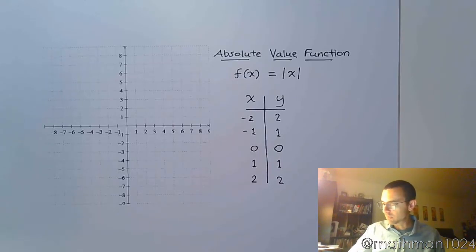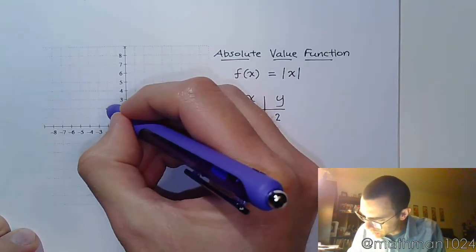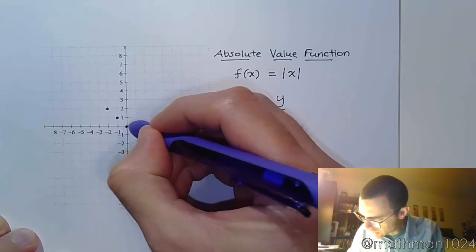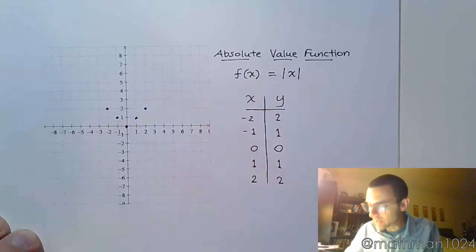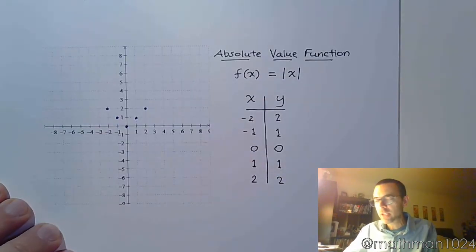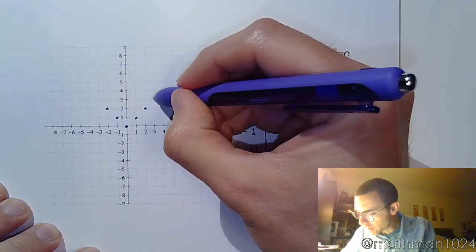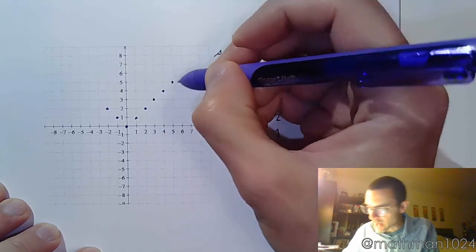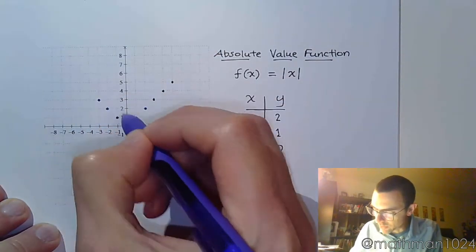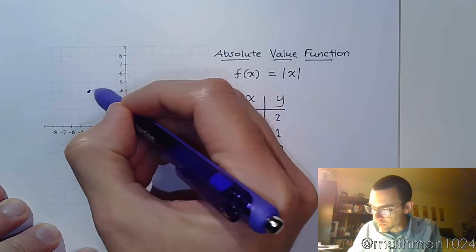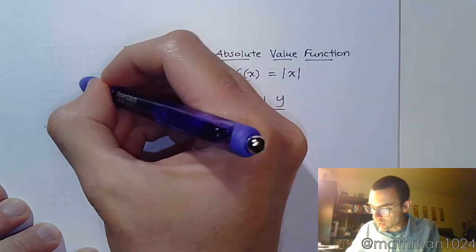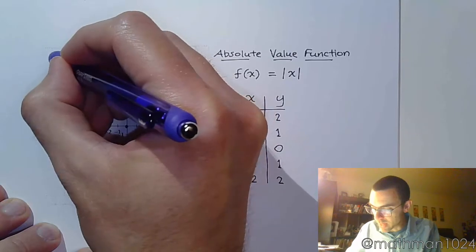So let's plot these guys. We've got negative 2, 2, negative 1, 1, 0, 0, 1, 1, and 2, 2. If I keep going here, the absolute value of 3 is 3, of 4 is 4, and on the other side, the absolute value of negative 3 is 3, of negative 4 is 4, and so on. So, we end up with this pattern.